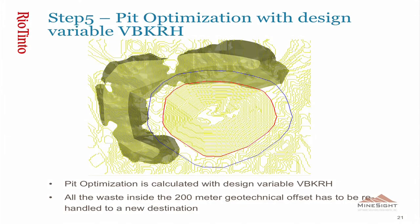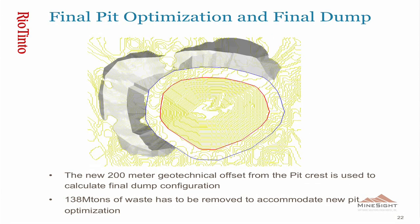The final step is to run pit optimization using the variable bbkrh, which includes the re-handle cost. You can see again the configuration of the dump in this slide. The red line is the final pit crest with block values informed by the re-handle cost, and the blue line is the 200-meter offset required by Geotech standards. The total re-handle for this pit optimization is 138 million tonnes, which equals $138 million in cost using the $1 per tonne assumption.